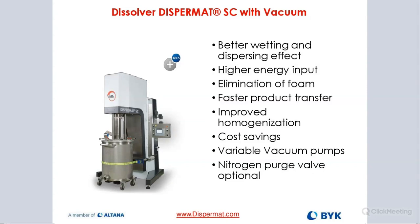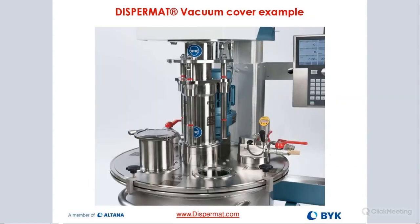The advantages include eliminating foam and having more efficient homogenization during the milling process. This close-up shows the vacuum cover at a smaller production scale — we make them much larger. They require a very sturdy, usually titanium-type cover because of the pressure needed to resist when we pull the vacuum. The containers also have to be reinforced.